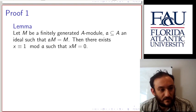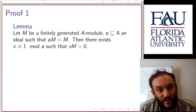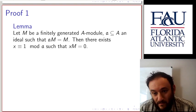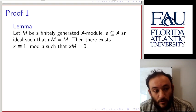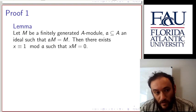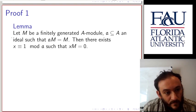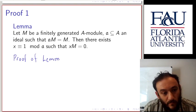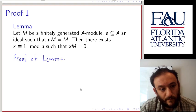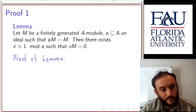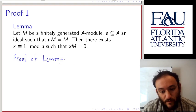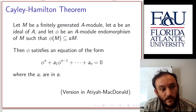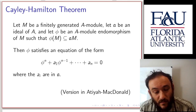Here's one proof from Atiyah-MacDonald, for which we'll require a lemma. If M is a finitely generated A-module and a in A is an ideal such that a·M = M, then there exists an x in the ring which is congruent to 1 modulo the ideal a, such that x·M = 0. Let's prove the lemma first, using a direct application of the Cayley-Hamilton theorem.